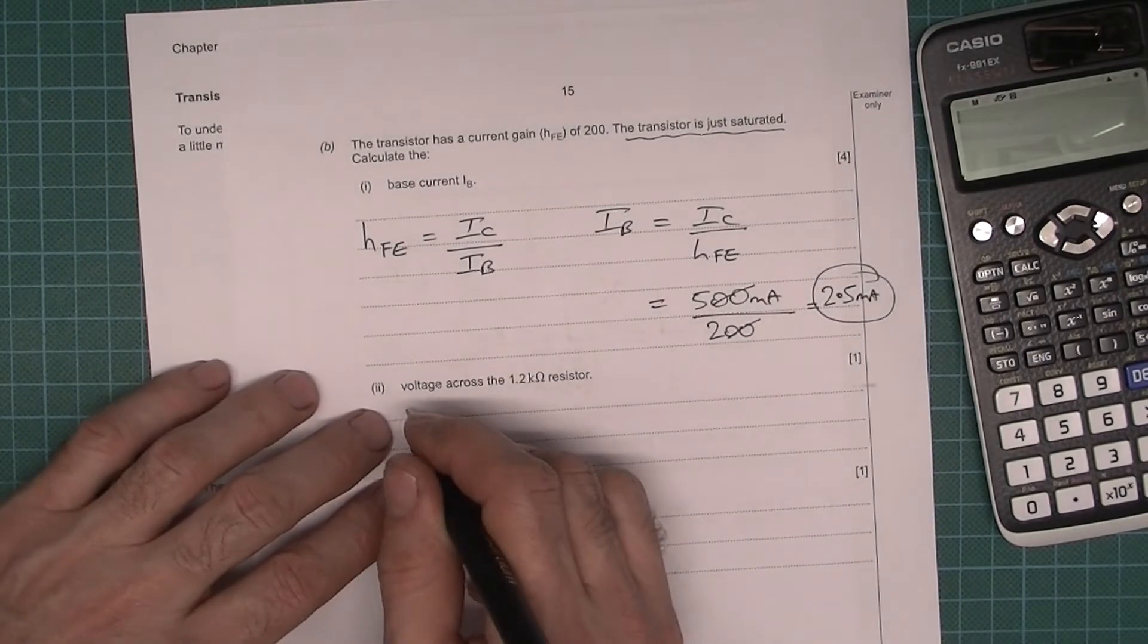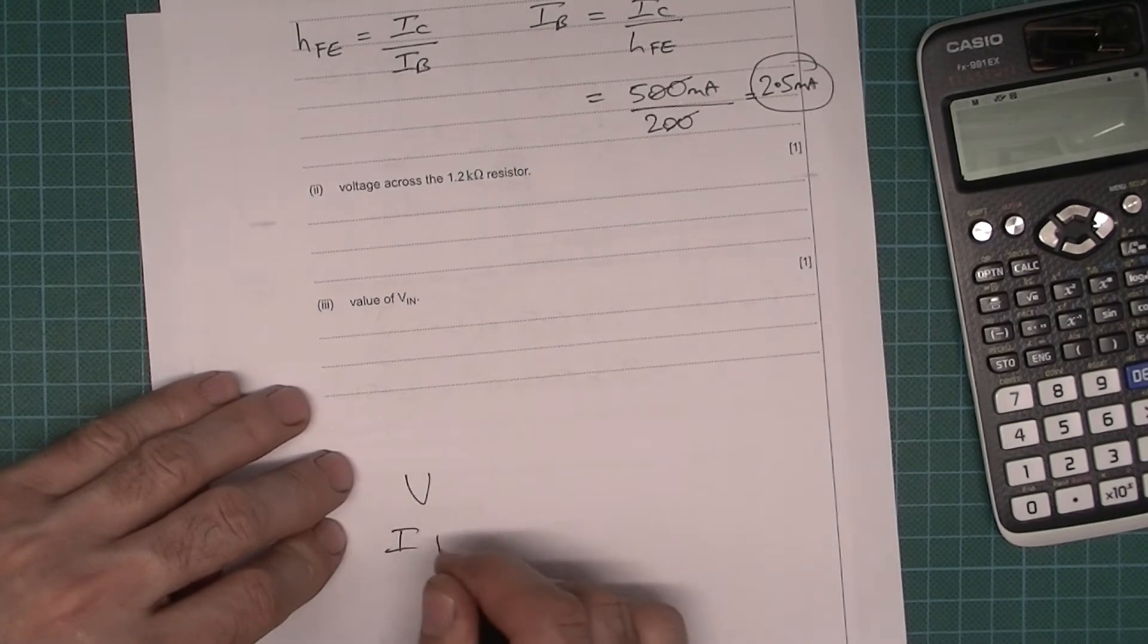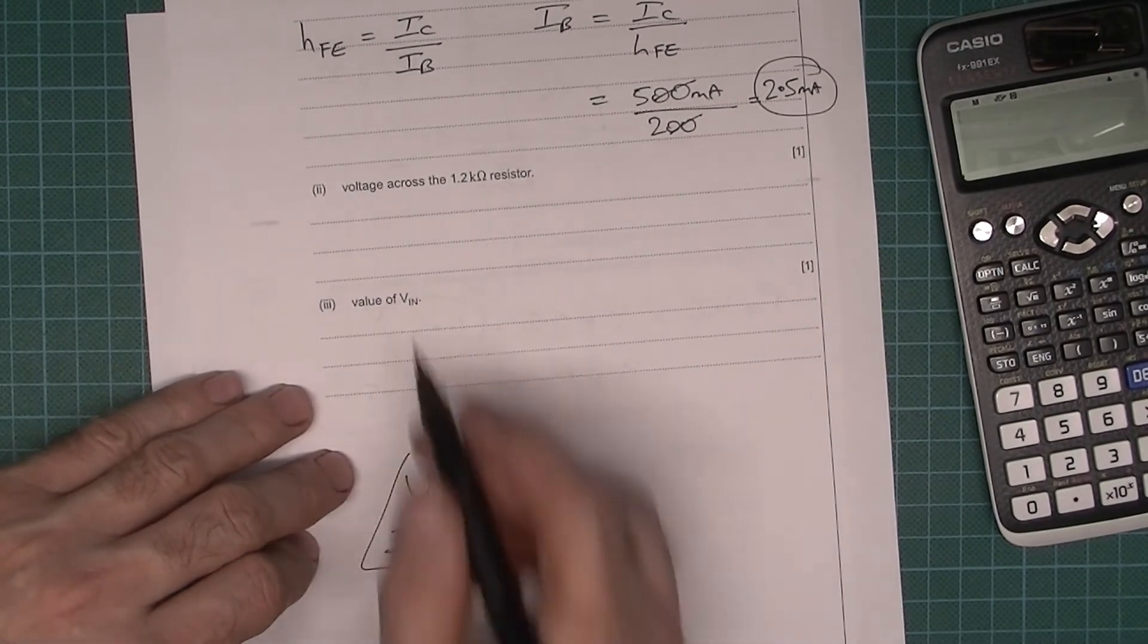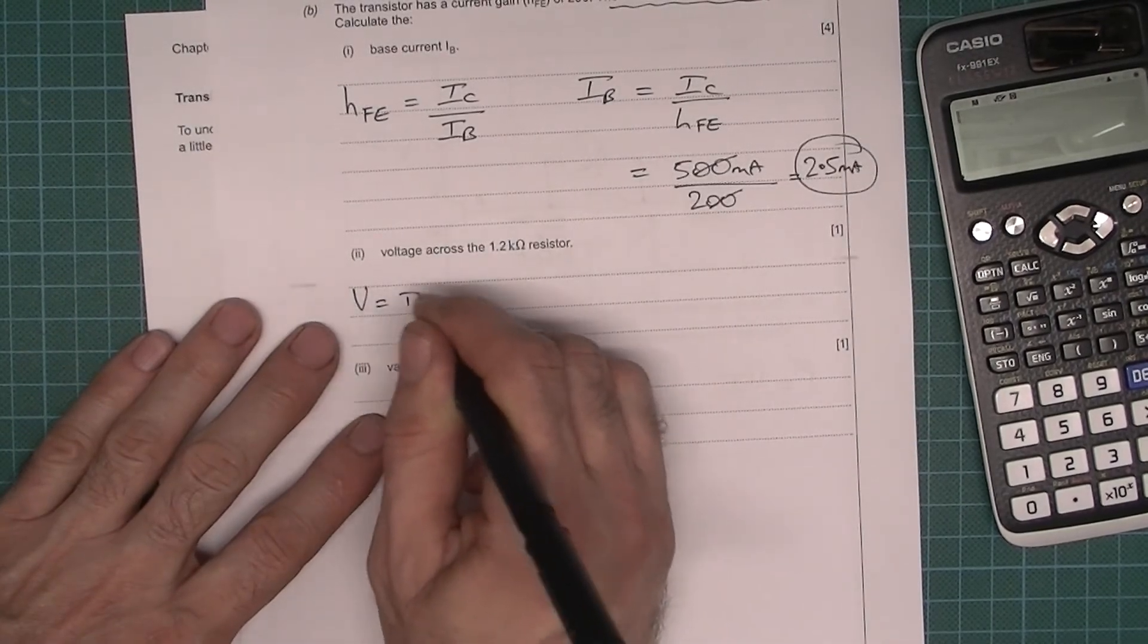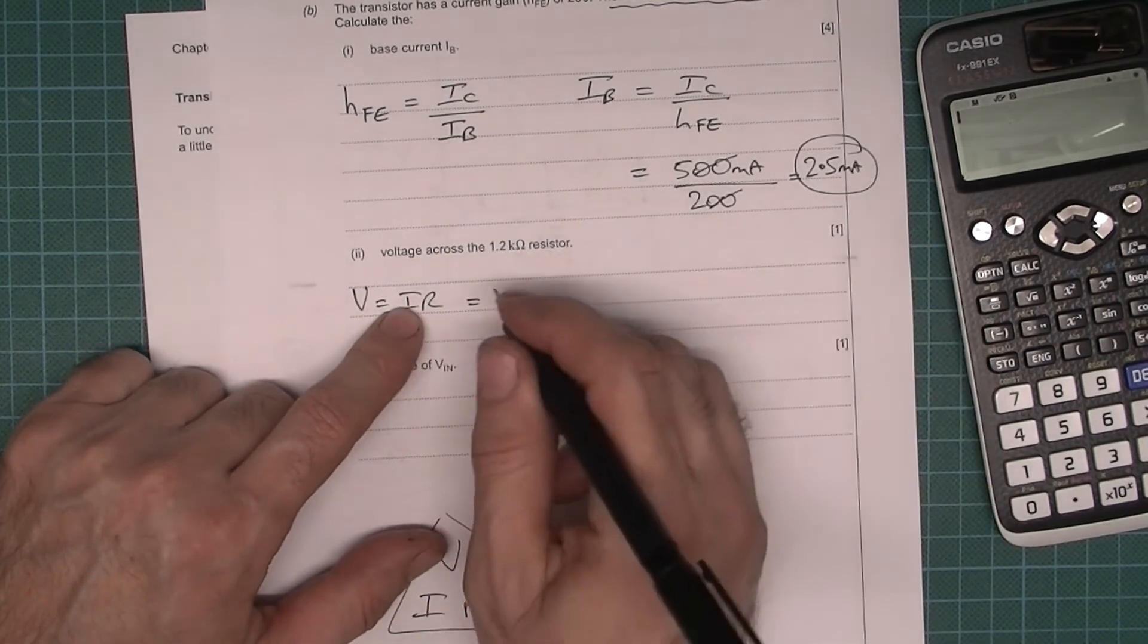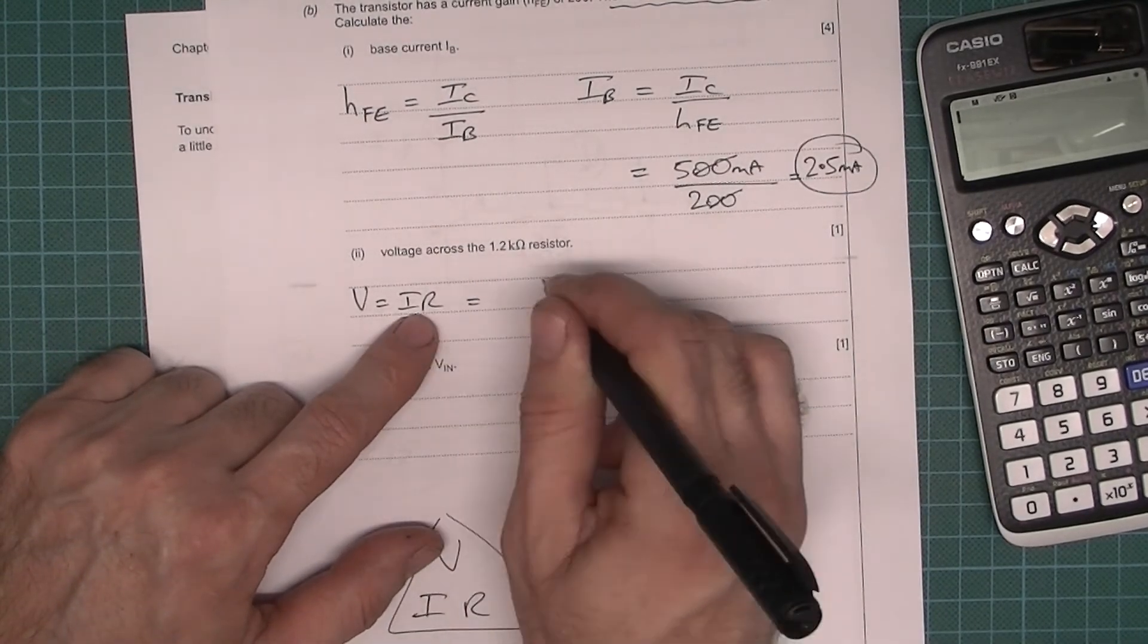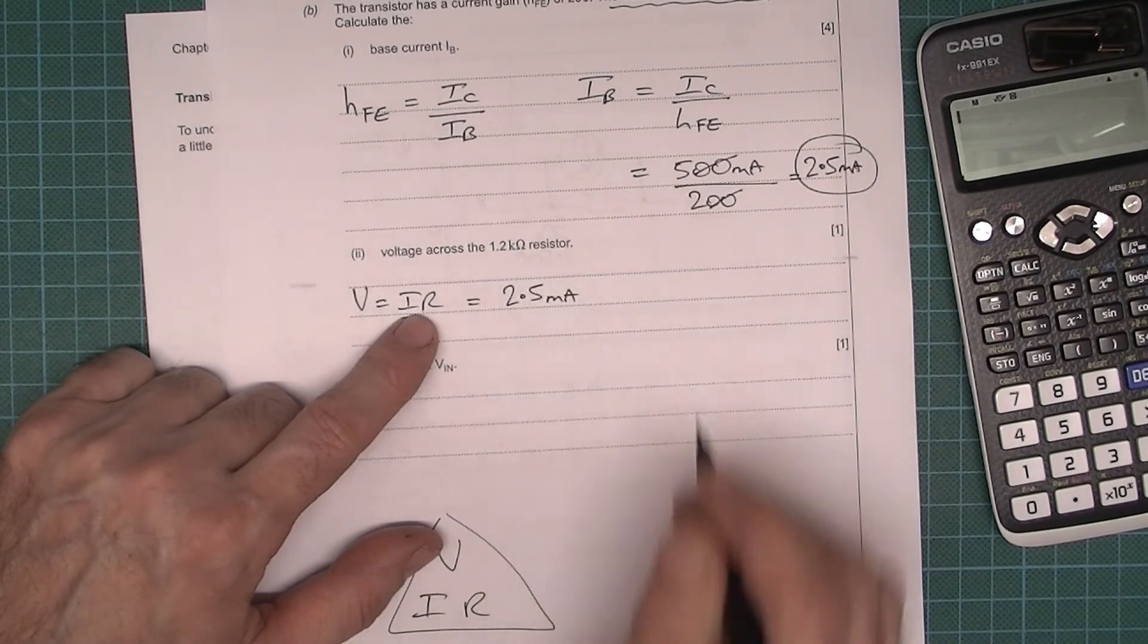So the voltage V. In fact, if you're not sure about this, V, I, and R, Ohm's law. So we want to calculate voltage, so V equals IR. V equals IR. The current, which was 2.5, so 2.5, let's just write it as milliamps for the moment.